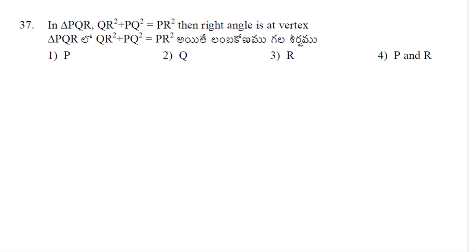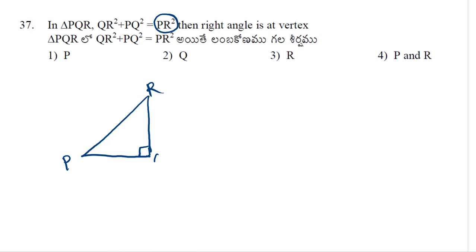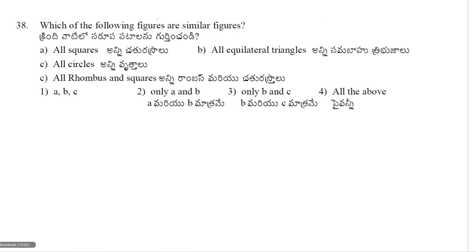In triangle PQR, QR² + PQ² = PR². Right angle is at which vertex? Since PR² is the largest side, PR must be the hypotenuse. The remaining vertex is Q, so Q = 90°. Right angle is at vertex Q — option 2 is correct.